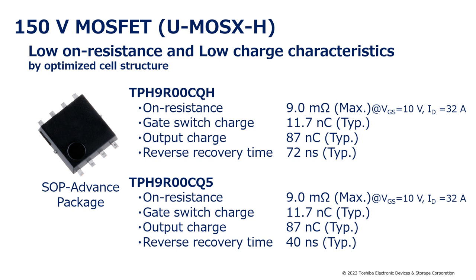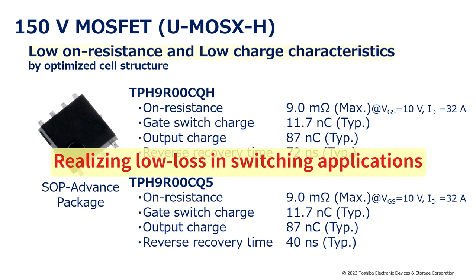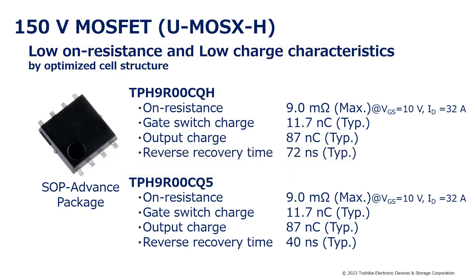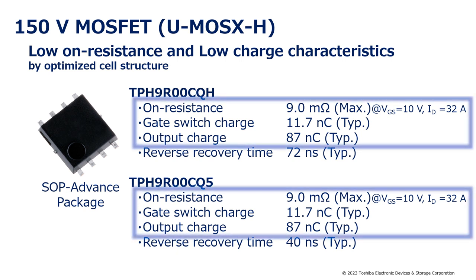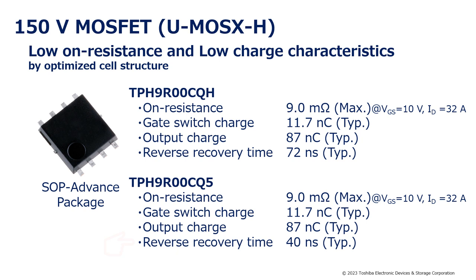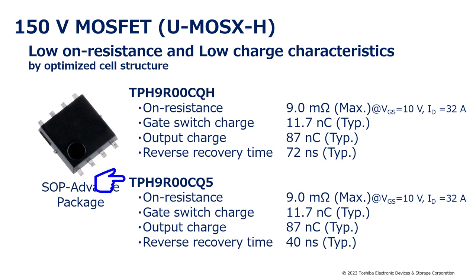This section introduces the 150-volt MOSFETs used in this non-isolated buck-boost DC-DC converter. By using the latest 10th generation new MOS processing and optimizing the cell structure, the trade-off between on-resistance and various charge characteristics has been improved compared to conventional products, realizing low loss in switching applications. TPH9R00CQH and TPH9R00CQ5 share similar characteristics such as on-resistance, gate switch charge, and output charge. However, in TPH9R00CQ5, the reverse recovery time of the built-in diode is 40 nanoseconds, making it a high-speed diode type, ideal for the high side.